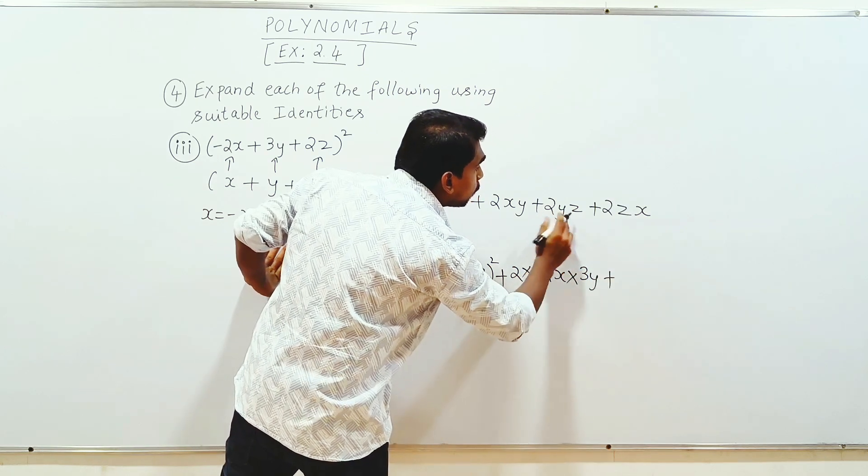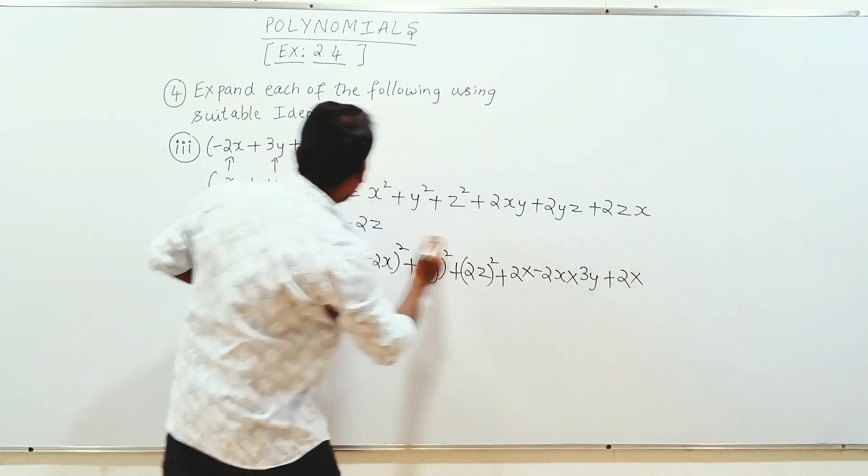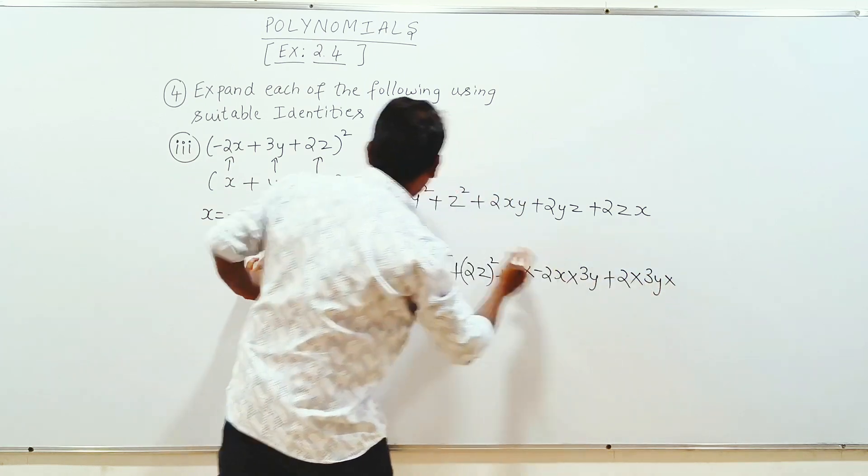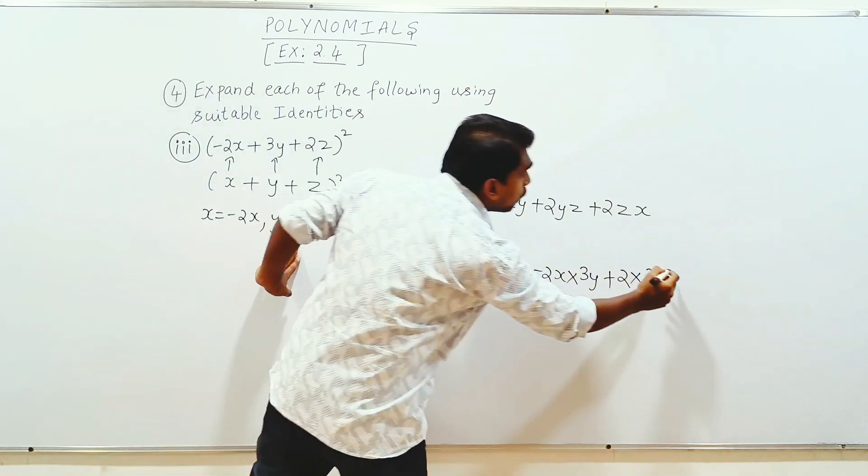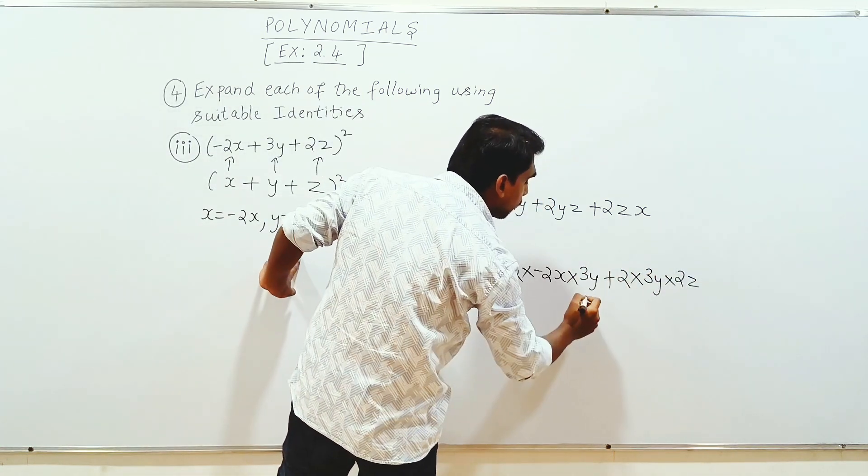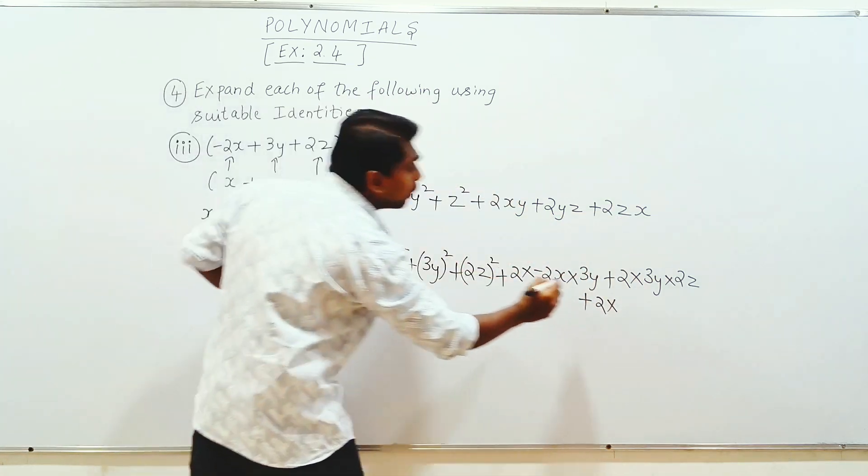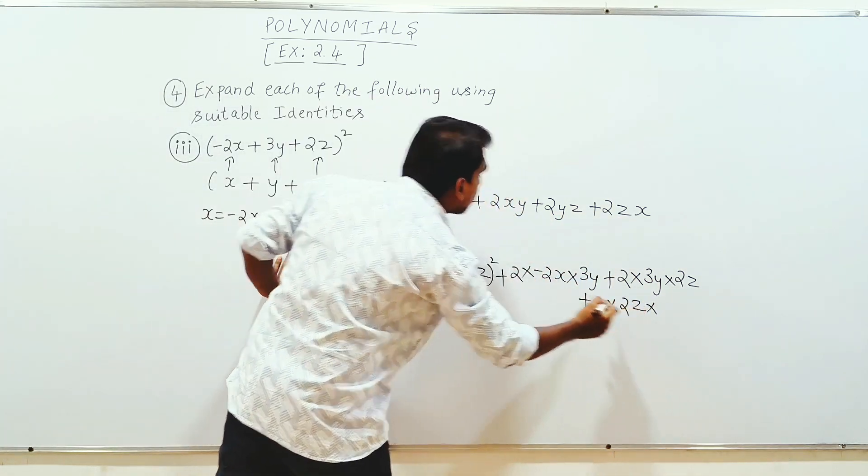plus 2yz. 2 into y value 3y into z value 2z plus 2zx. z value 2z into x value minus 2x.